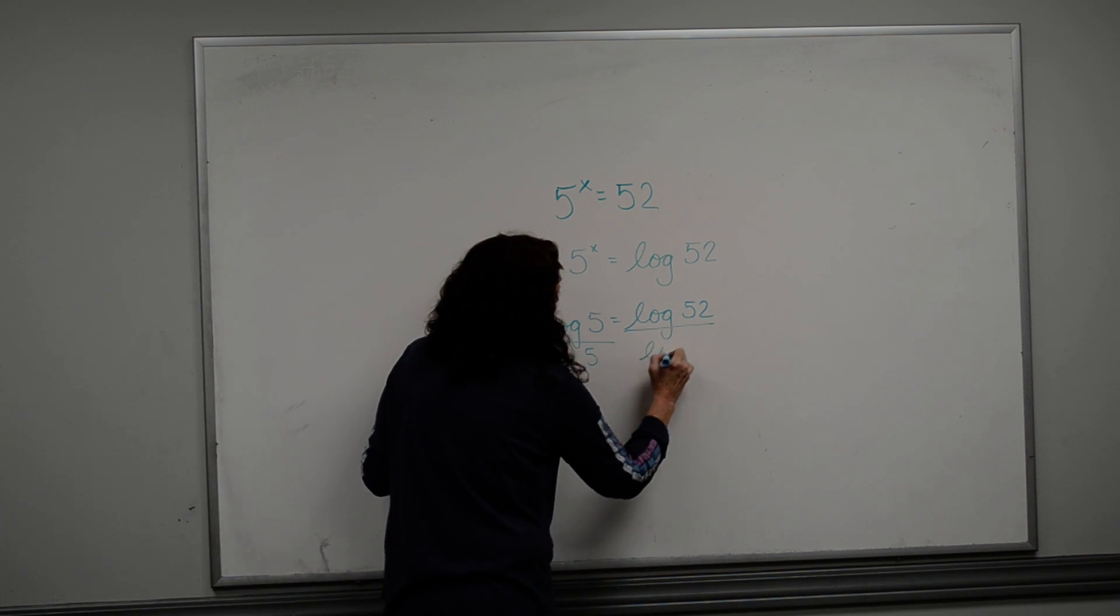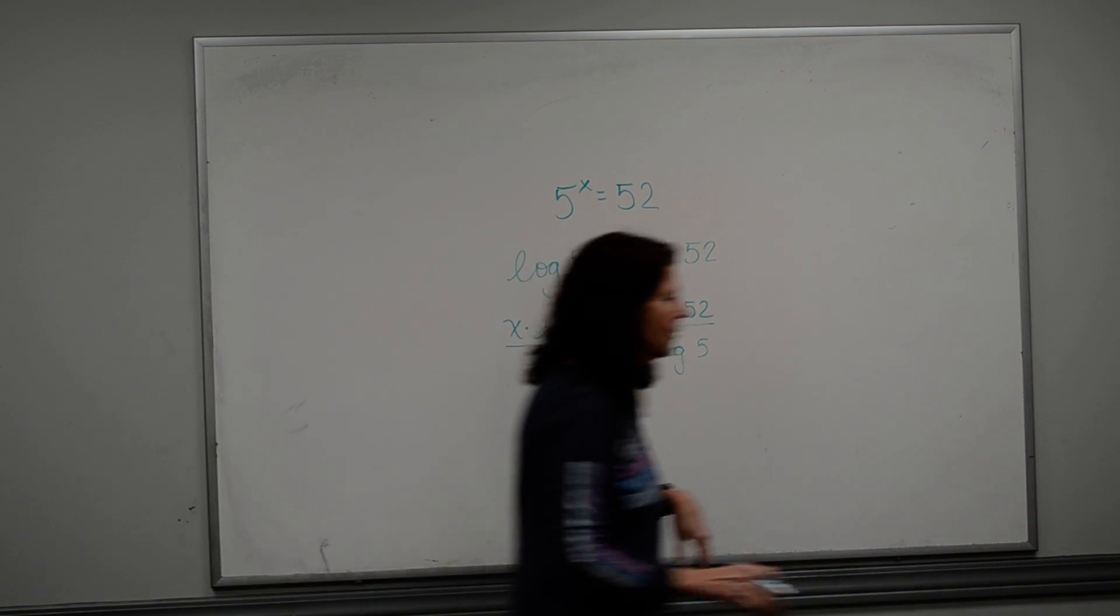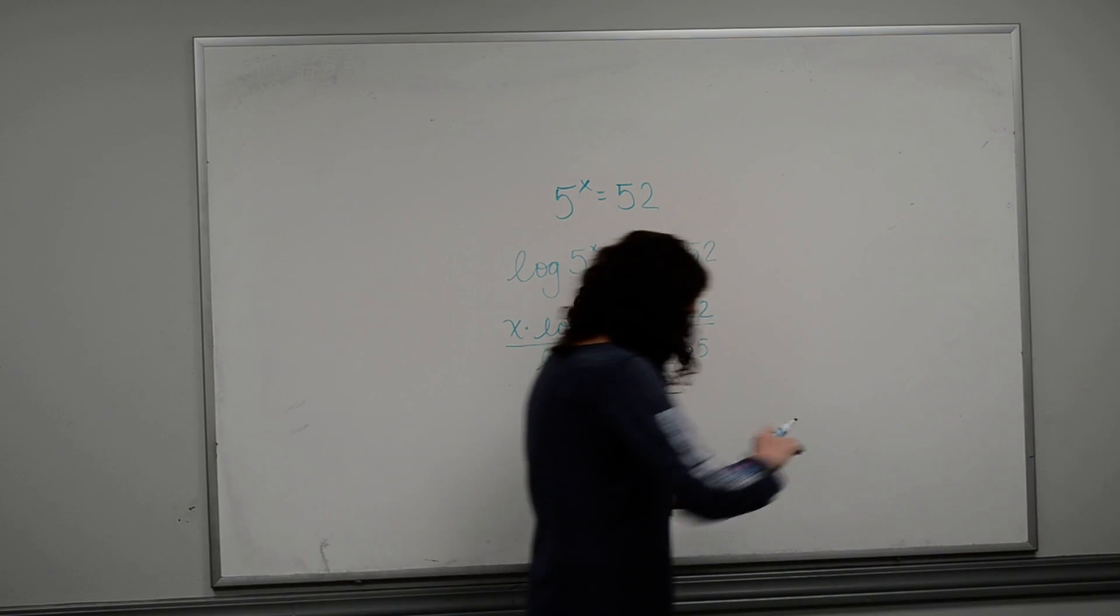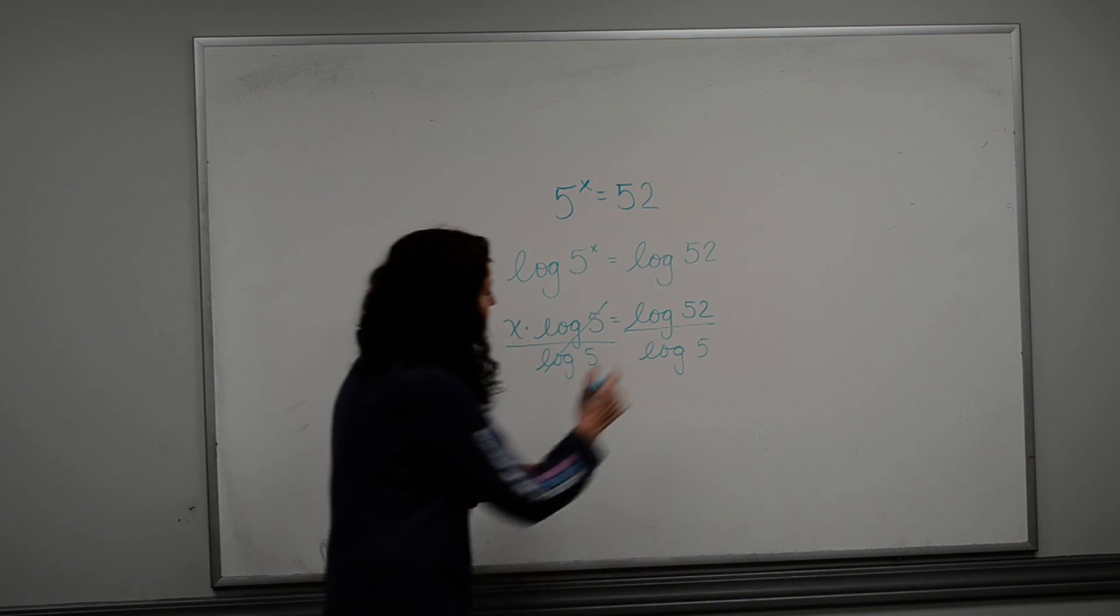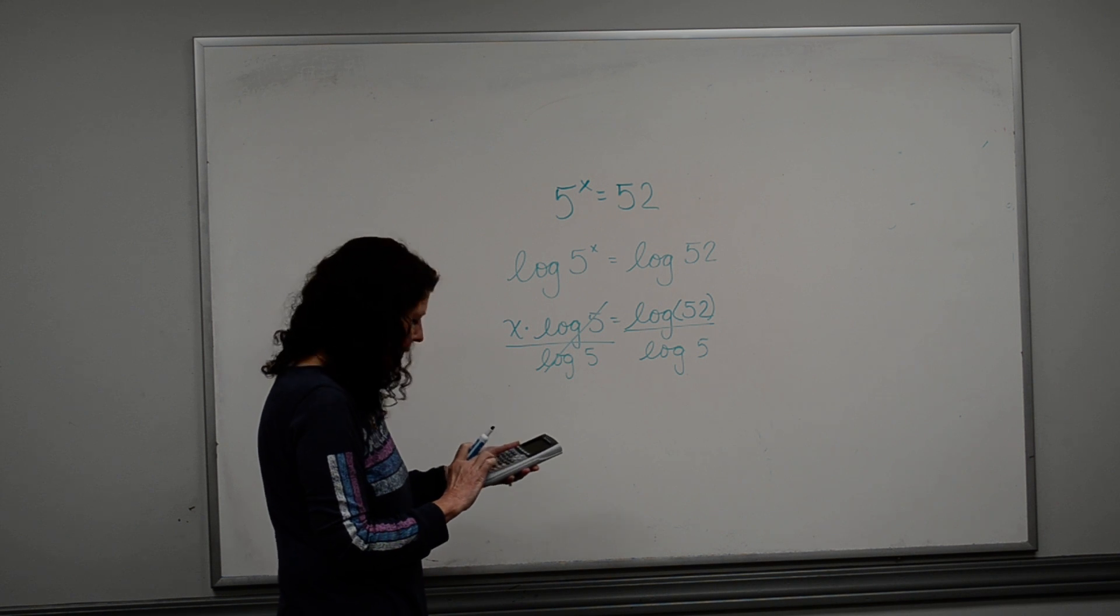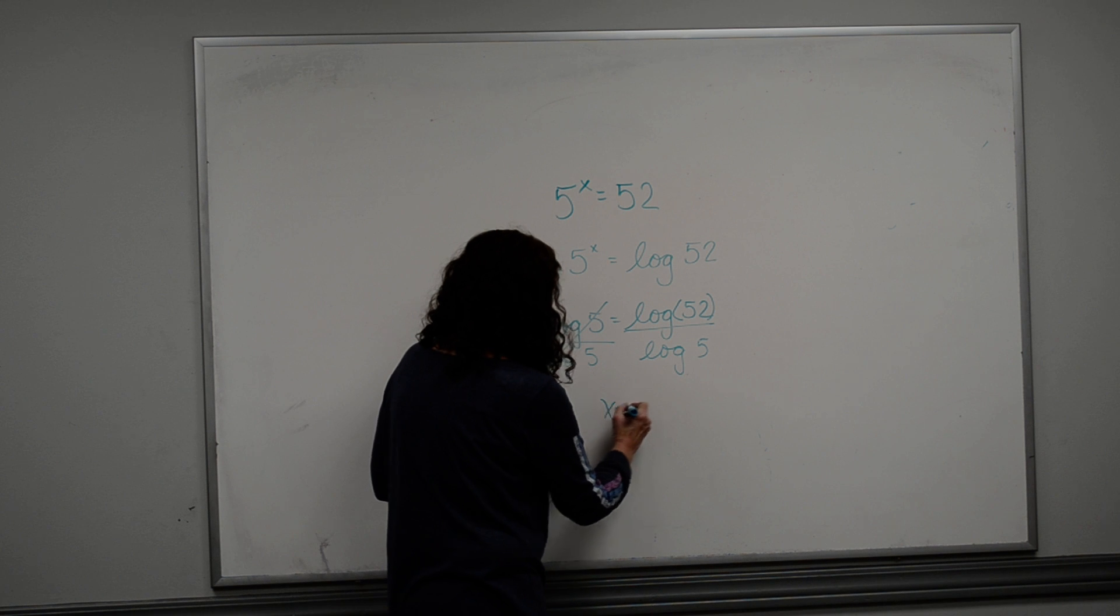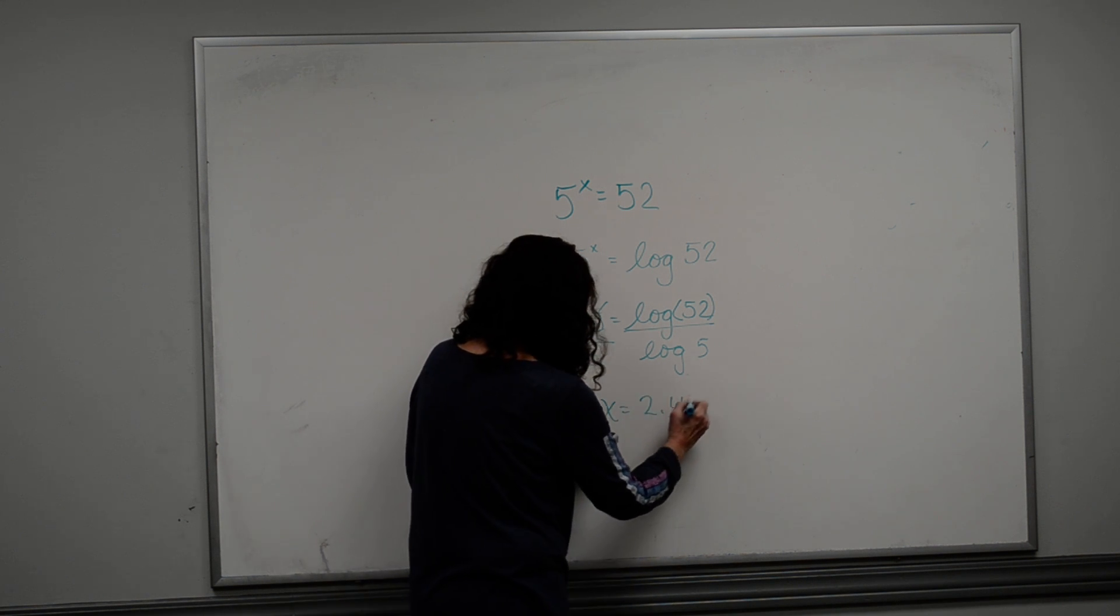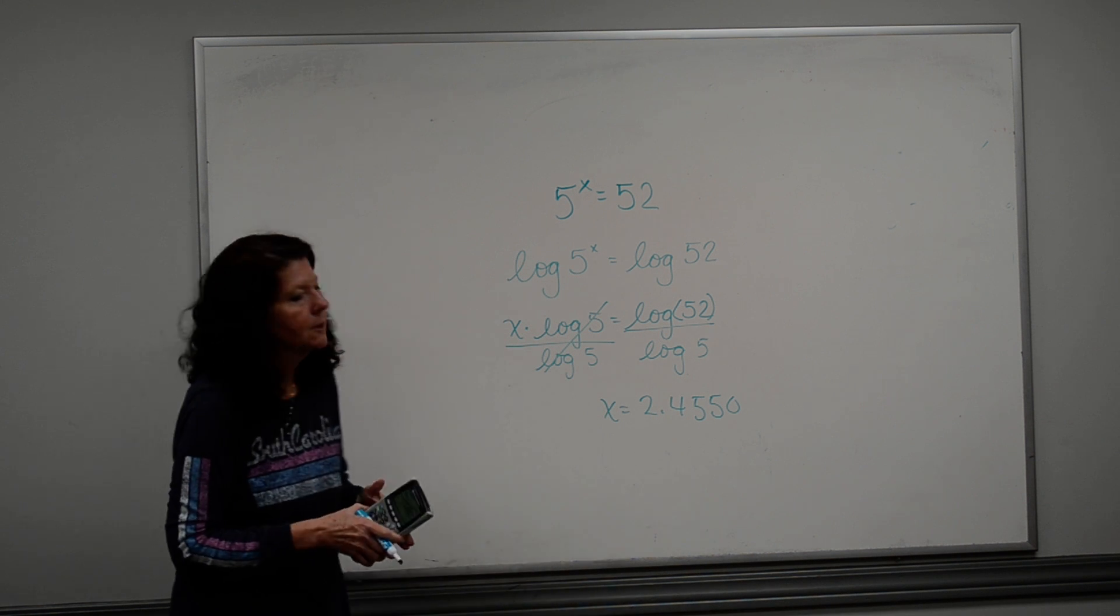I'm going to divide both sides by the log of 5, and literally my answer is just going to be gotten through my calculator by taking the log of 52, but I've got to close the parentheses, divided by the log of 5, and that's going to give me an x value of 2.4550 if they tell me to round to the nearest fourth.